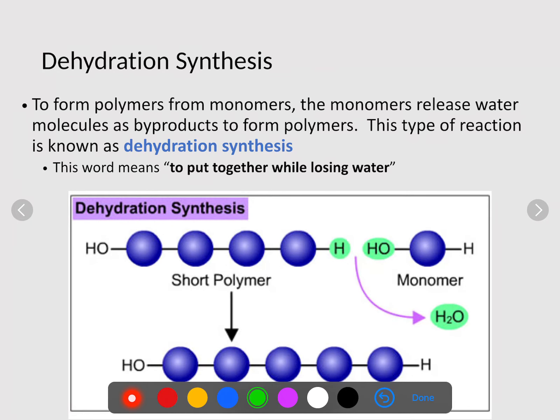To form polymers from monomers, the monomers release water molecules. The releasing of water or H2O is a byproduct to form these large molecules. This type of reaction is known as dehydration reaction. When you think dehydration, you're thinking taking out. In this case, the water molecule is what's being taken out.